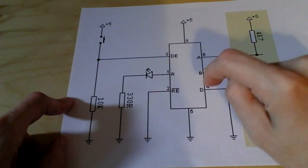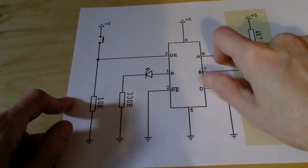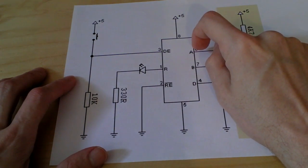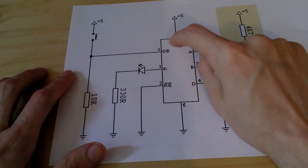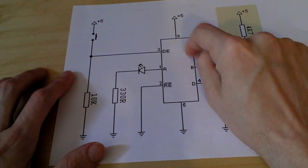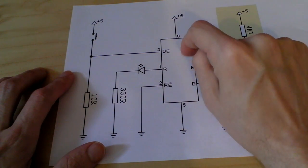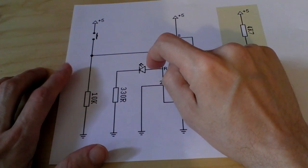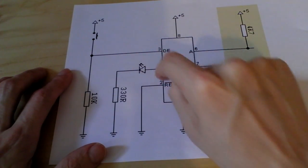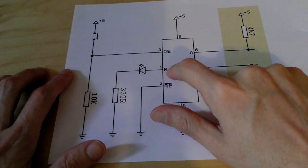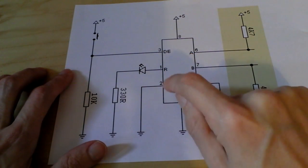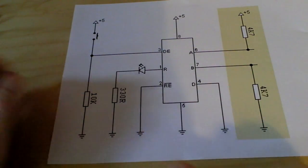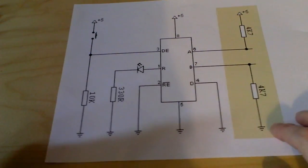So when the drive enable activates, it pulls the A line low, and because the internal wiring of the transceiver chip is such that the drive line is coupled to the receive line, it'll detect that A has been pulled low and the LED will extinguish. And because the receive is being constantly monitored because the receive enable is pulled low because it's active low, it should all work within one chip.